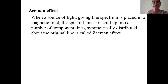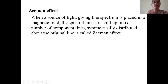So he chose a lamp source giving out a line spectrum to make the spectral study easier. He placed the lamp in the magnetic field and observed that each spectral line split up into many component lines symmetrically distributed about the original line, which is called the Zeeman effect.